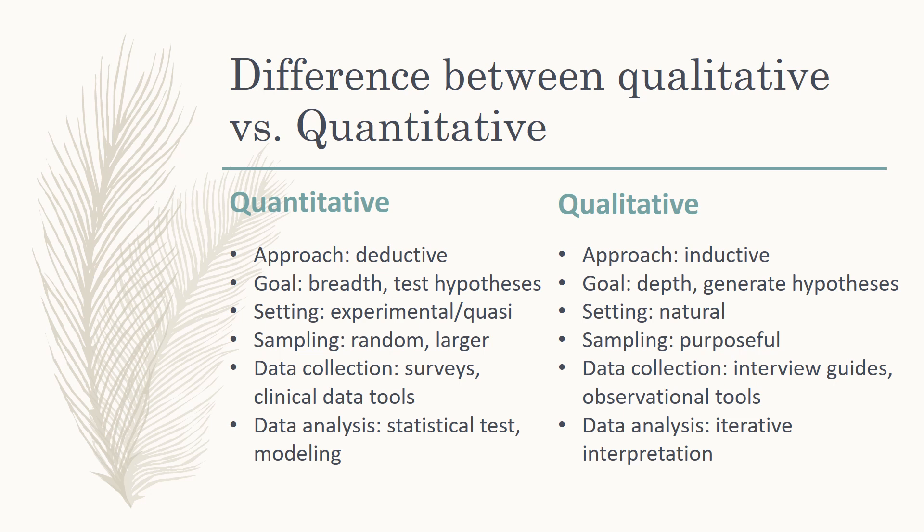For qualitative research, we don't use statistics. We analyze our data as we are collecting it — we call this an iterative process. We might do one interview, read that interview, see themes emerging, and then conduct another interview after that. The data analysis is iterative and ongoing at the same time we're collecting data, and it often guides our sampling — did we answer our question, or do we need to interview more people? Data analysis in qualitative research is done by human beings, often multiple researchers, who make sense of those piles of data.